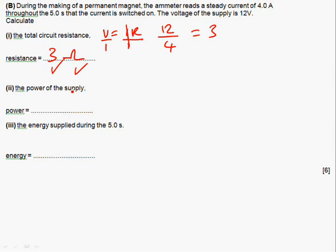Calculate the power of the supply. Power is just voltage times current. P equals VI or IV, whatever you like. Voltage is 12, current is 4. 12 times 4 is 48. You can put joules per second or watts.